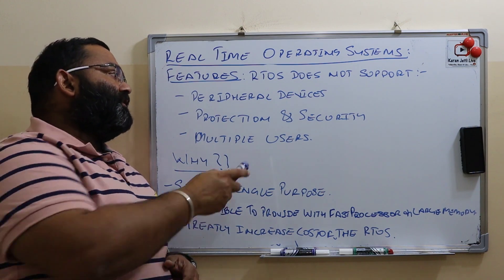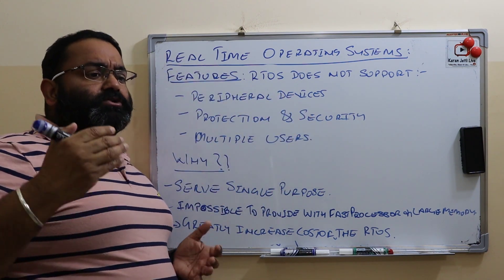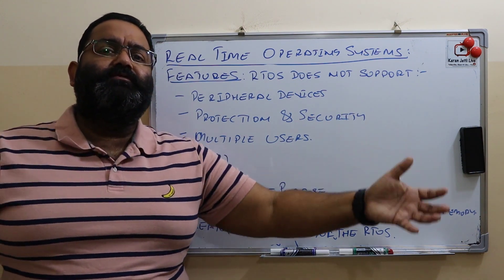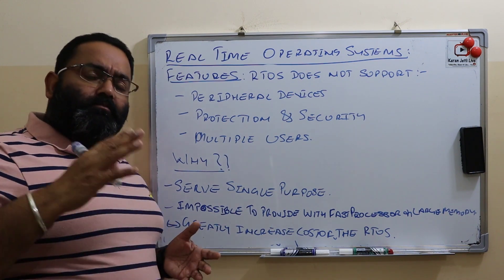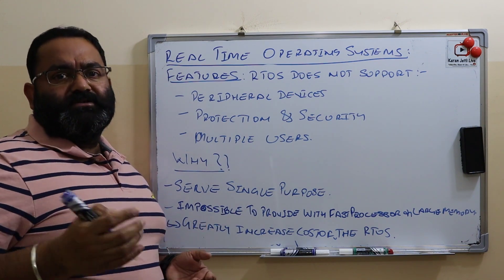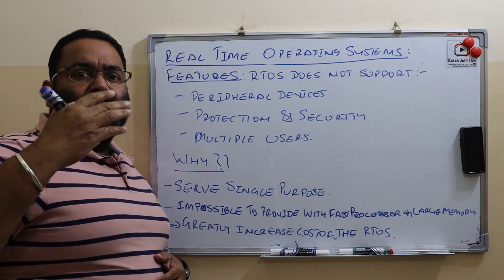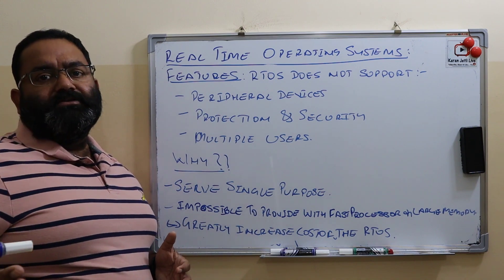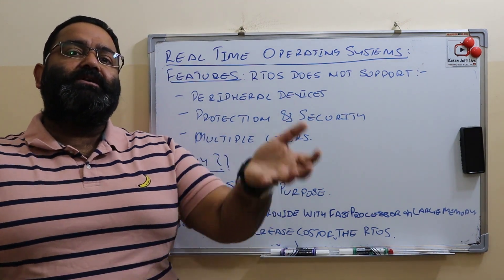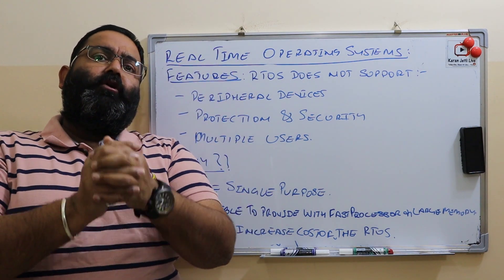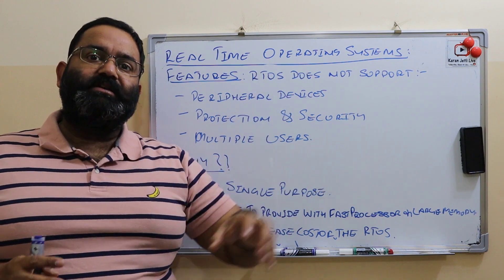Real-time systems do not support any protection and security mechanism. Since they do not support multiple users and do not have a large variety of input-output files, they do not need much protection and security. Moreover, the processors are very fast and the memories are very large, which makes it nearly impossible to provide security features. Real-time operating systems also do not support multiple users, as adding multiple users increases the cost. They are designed to perform a specific task with correctness and timeliness in mind.